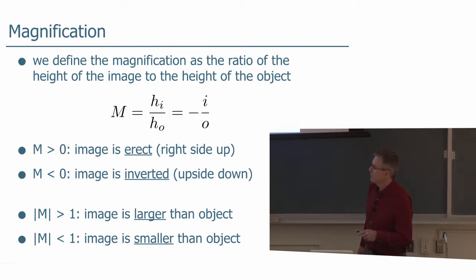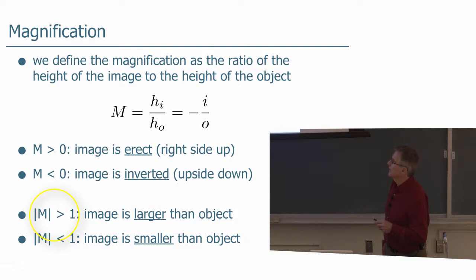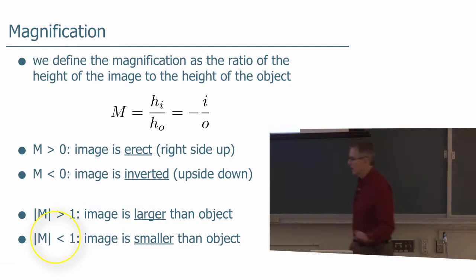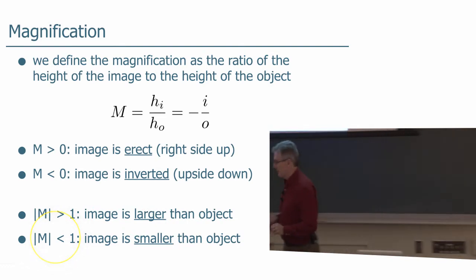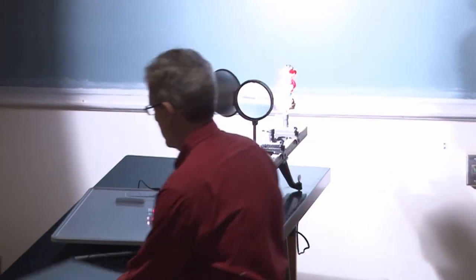The other thing we care about is the magnitude of M. If the magnitude of M is greater than one, the image is larger than the object, because the height of the image is greater than the height of the object. If the magnitude is less than one, the image is smaller than the object. When we placed Ernie close, we had a pretty big image.